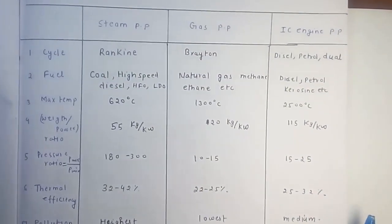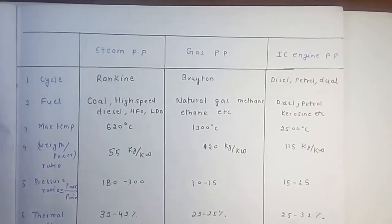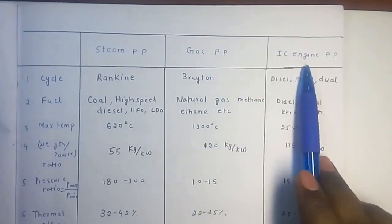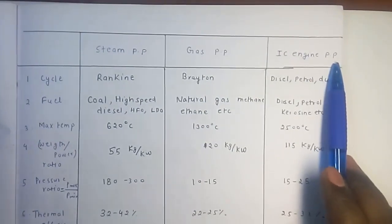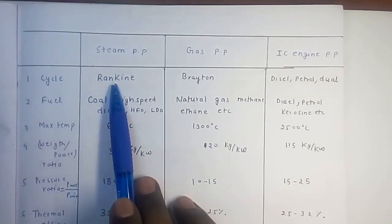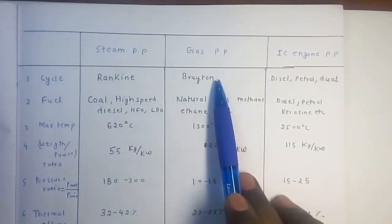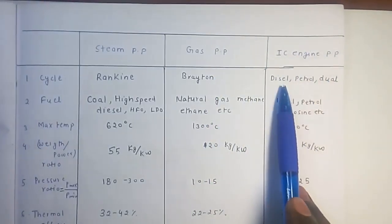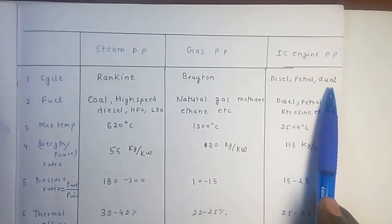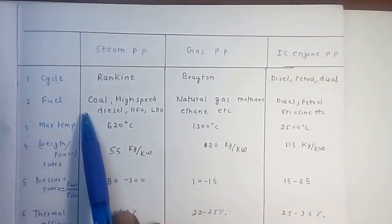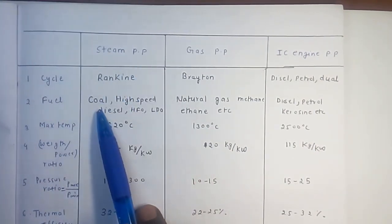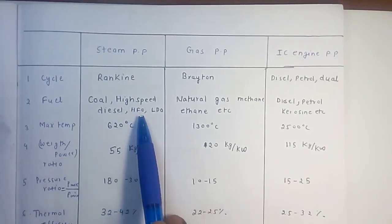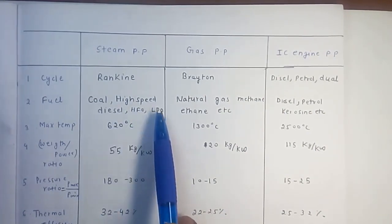There are three types of power plants: steam power plant, gas power plant, and IC engine power plant. Steam power plant is based on Rankine cycle, gas power plant is based on Brayton cycle, and IC engine power plant is based on diesel cycle, petrol cycle, and dual cycle. The fuel used in a steam power plant includes coal, high speed diesel (HSD), heavy fuel oil (HFO), and light diesel oil (LDO).